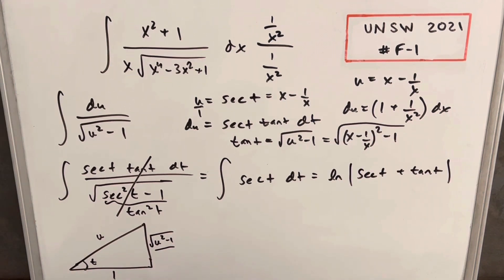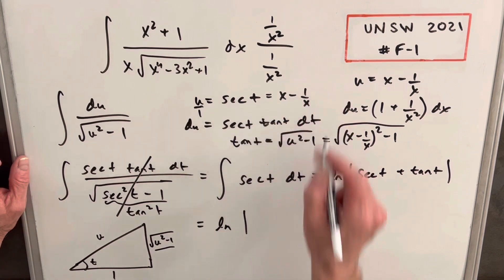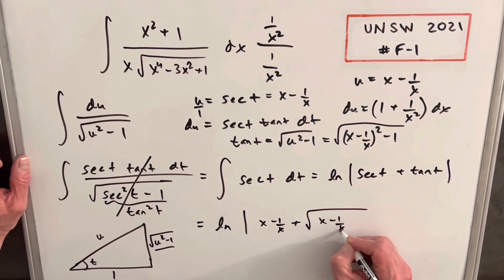Now I'm just going to back substitute, and I'm going to do it right to x in order to finish this off. So we're going to have natural log, absolute value, secant t is going to be this. We're going to have x minus 1 over x plus our tan t value, which is the square root of x minus 1 over x squared minus 1.